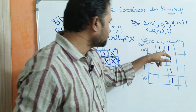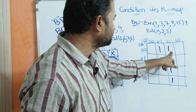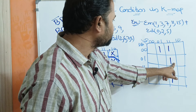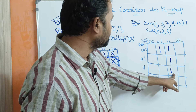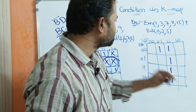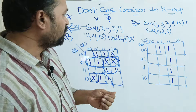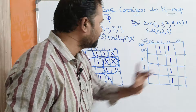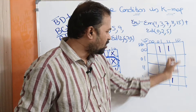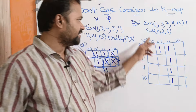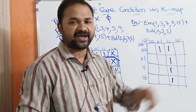So: cell 1 is 0,0,0,1; minterm 3 is 0,0,1,1; minterm 7 is 0,1,1,1; minterm 15 is all 1s; minterm 11 is 1,0,1,1. For all these combinations, the output is 1. Next, sigma D of 0, 2, 5 — for certain combinations the output is not defined, that is don't care. We don't care about what is the output; the output may be either 0 or 1.